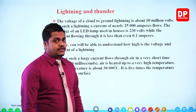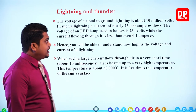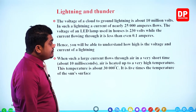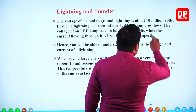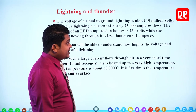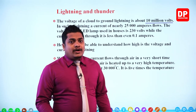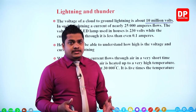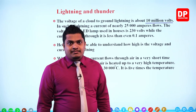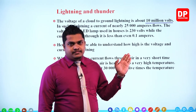The next topic is lightning and thunder. The voltage of a cloud to ground lightning is about 10 million volts — a very large amount of potential difference. This is immense compared to high-tension power lines, which are around 60,000 volts. Because of this huge potential difference, charges have the ability to travel even through air, even though it is an insulator.